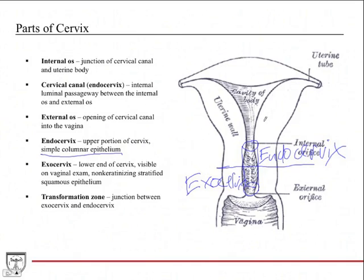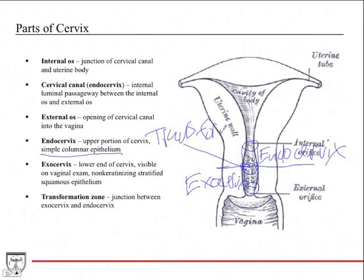The endocervix is continuous with the uterus and has the same luminal epithelium as the uterus. An important clinical concept is the transformation zone, which is the junction between the exocervix and the endocervix — where there's a transformation from simple columnar epithelium in the endocervix to stratified squamous non-keratinized epithelium in the exocervix. This is the zone where pap smear cells are collected, as it's a common location for cervical cancer or cervical neoplasia.